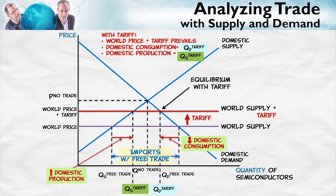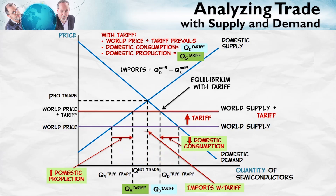What about imports? Imports are the difference between the quantity demanded and the quantity supplied. The quantity demanded with the tariff is here, the quantity supplied is here. So imports are the difference — this distance right here. Notice that imports have fallen.